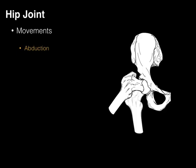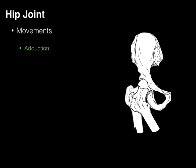Abduction of the hip joint is moving the femur away from the midline. The primary muscles that abduct the hip are the gluteus medius and minimus. Adduction of the hip joint is primarily accomplished by the medial compartment thigh muscles: adductor longus, adductor brevis, adductor magnus, and the gracilis.